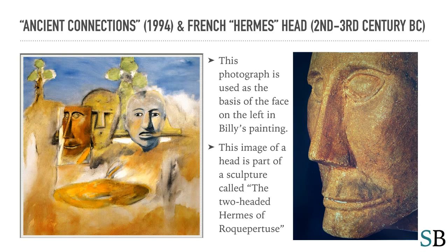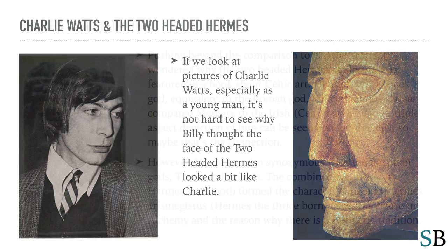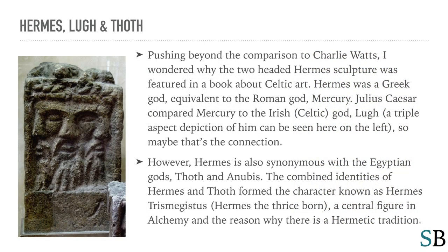This image on the right is part of a sculpture called the Two-Headed Hermes of Roque-Patoos. If we look at pictures of Charlie Watts, especially as a young man, it's not hard to see why Billy thought the face of the Two-Headed Hermes looked a bit like Charlie. But more importantly, pushing past the comparison to Charlie Watts, I wondered why the Two-Headed Hermes sculpture was featured in a book about Celtic art. Hermes was a Greek god, equivalent to the Roman god Mercury. Julius Caesar compared Mercury to the Irish and Celtic god Blue, and a triple-aspect depiction of him can be seen here on the left. So maybe that's the connection.